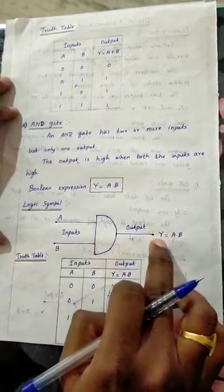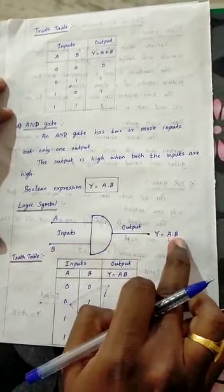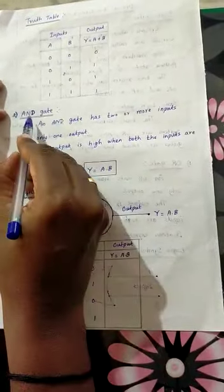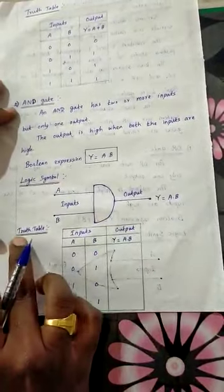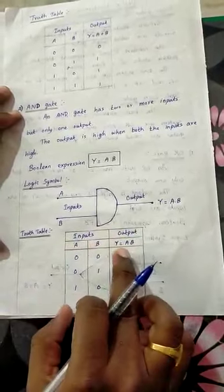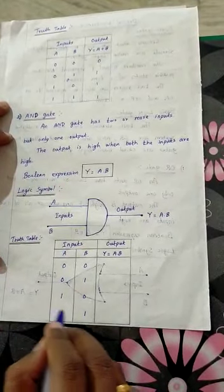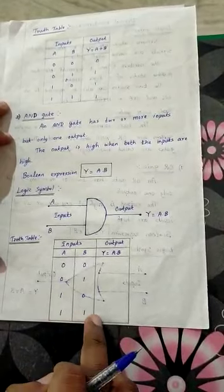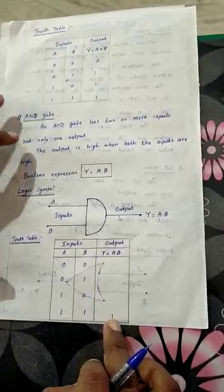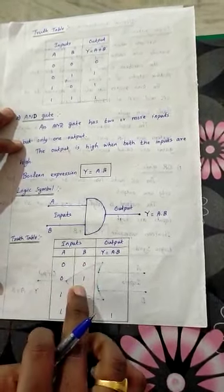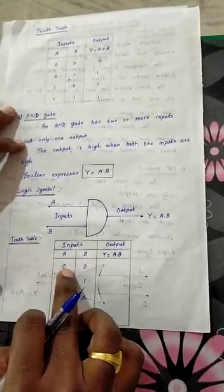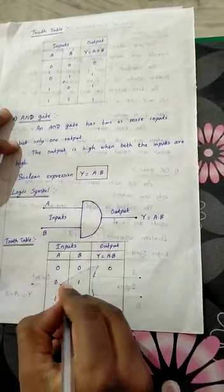Inputs outputs A and B two inputs, y equal to A and B output. AND gate important points: the output is high when both the inputs are high. Otherwise first one second one third one input two inputs low so output low.